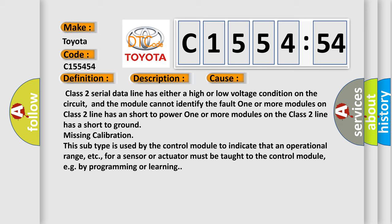This diagnostic error occurs most often in these cases. Class 2 serial data line has either a high or low voltage condition on the circuit, and the module cannot identify the fault. One or more modules on Class 2 line has a short to power. One or more modules on the Class 2 line has a short to ground missing calibration.